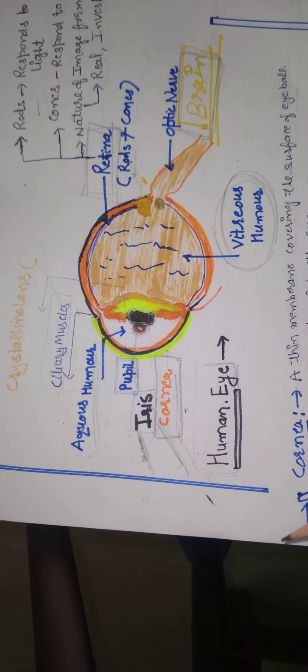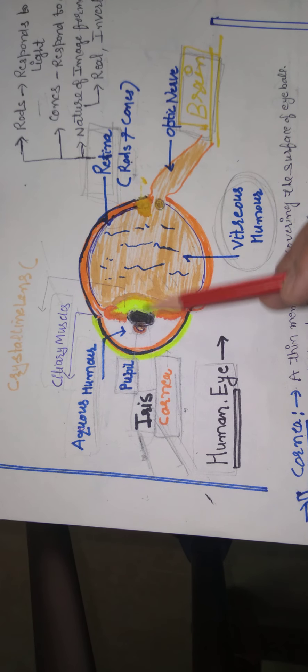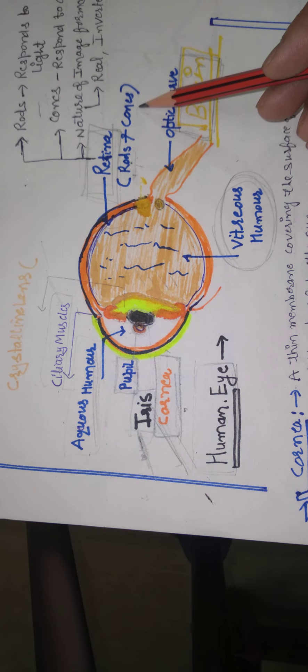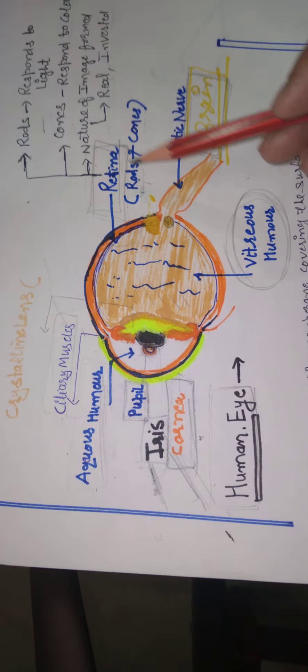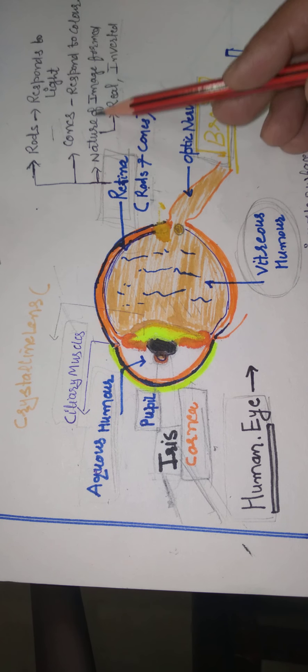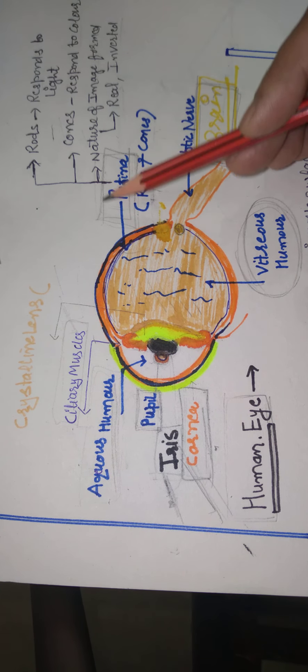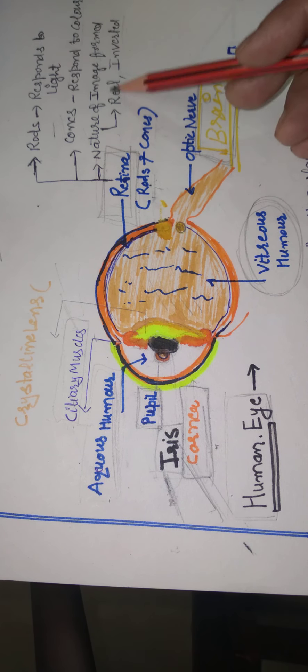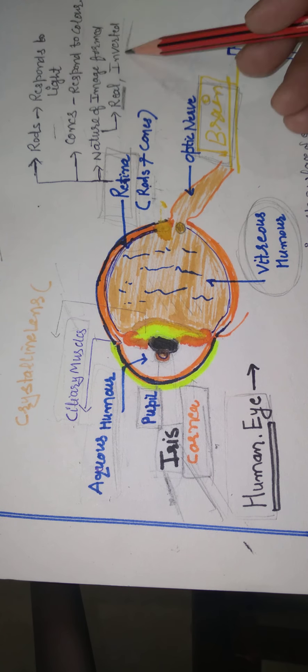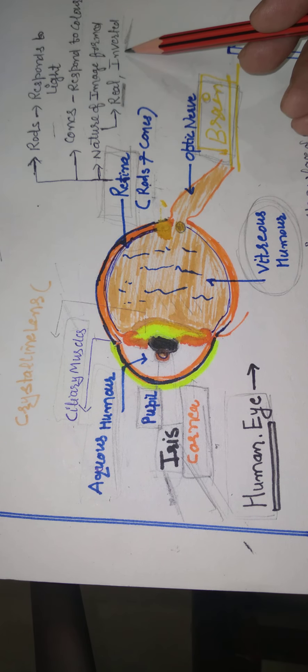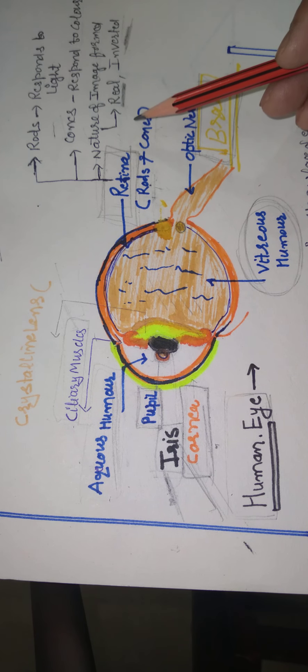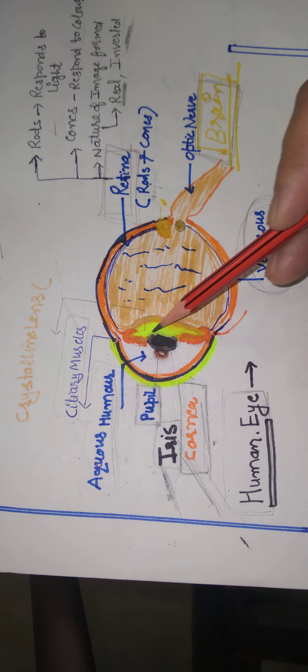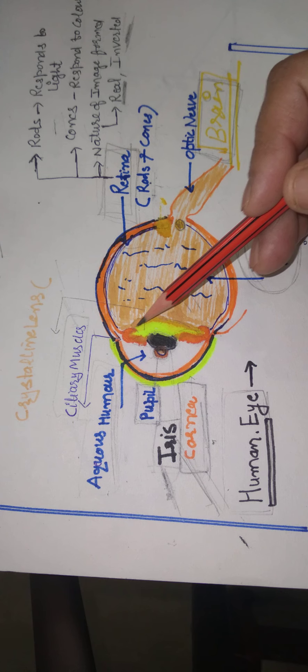From the outer object through these various parts of the eye. Retina composed of rods and cones. Rods respond to the light and cones respond to the color. And the image formed on the retina is real and inverted. Real and inverted image formation is a convex lens property. So the eye lens is a convex lens.